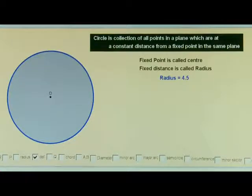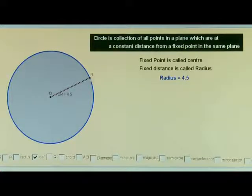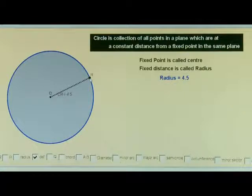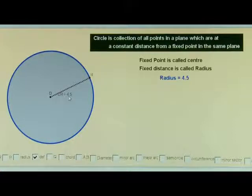Let me take a point R on the circle. Whenever the point R is on the circle, the distance of this point from the center will always be equal to the radius of the circle. The radius of the circle is 4.5, and the distance of point R from the center is also 4.5, which is equal to the radius of the circle.